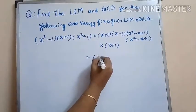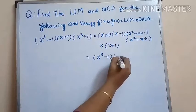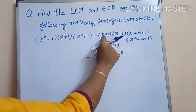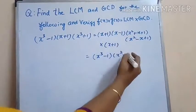Now our RHS will become x cubed minus 1 times x cubed plus 1 times x plus 1.